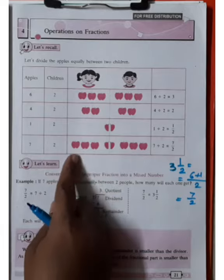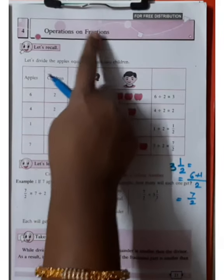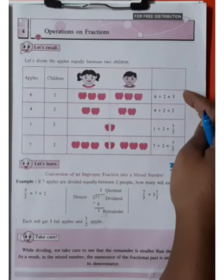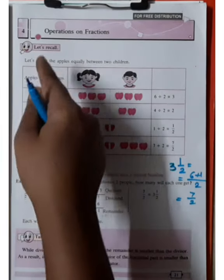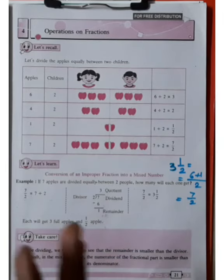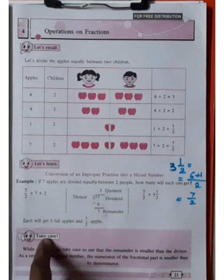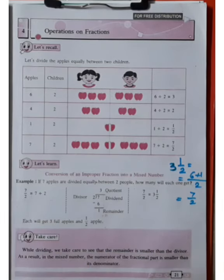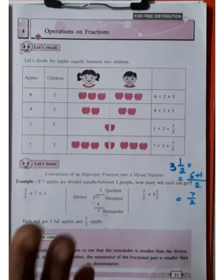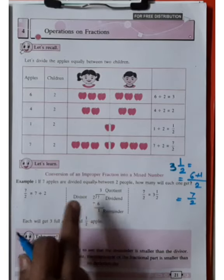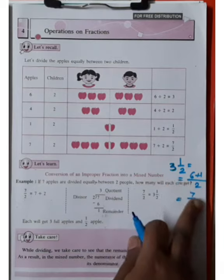So this is the introduction about fractions. What is the meaning of fractions and how many operations are there on fractions? There are four operations on fractions: addition, subtraction, multiplication, and division. These are the four most important basic operations on fractions.